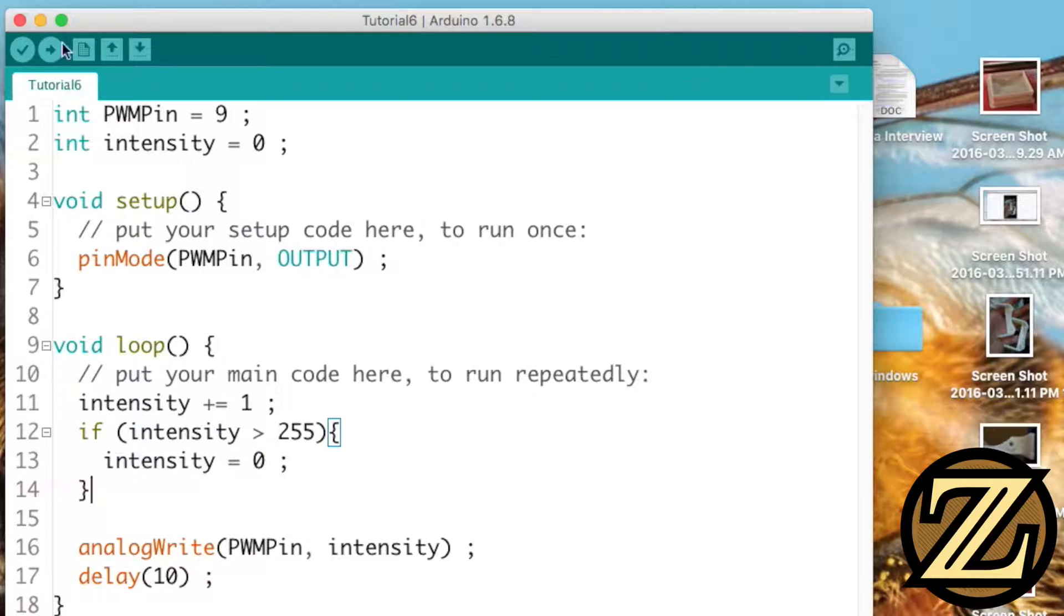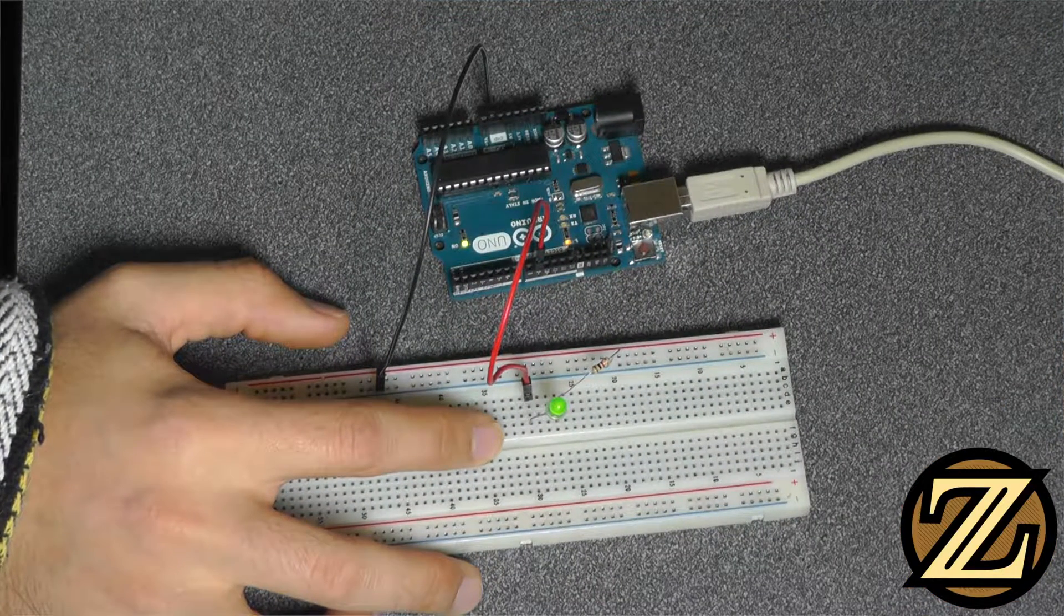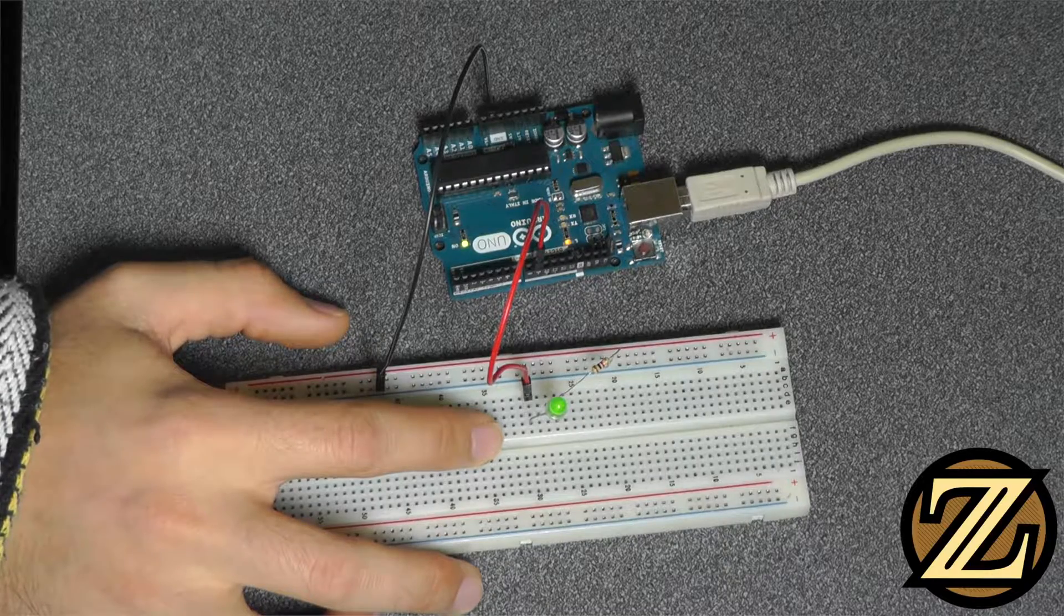Let's give this a save and upload it to the UNO. Now here you can see the LED increasing in intensity until it resets.